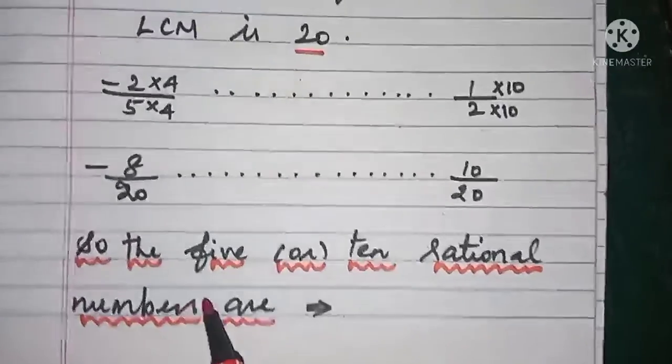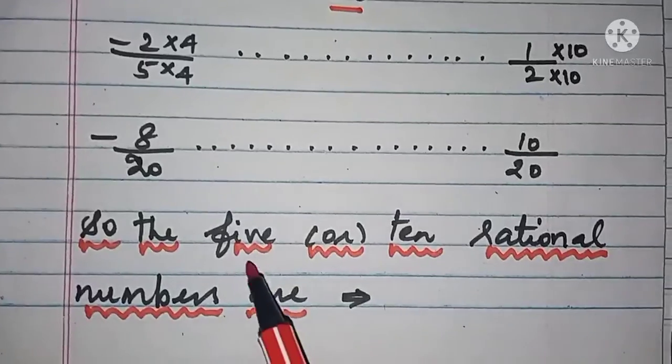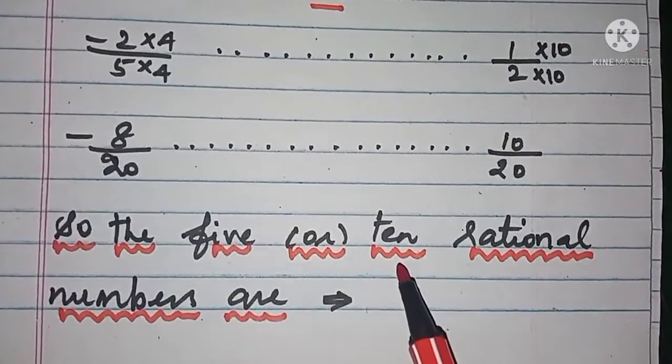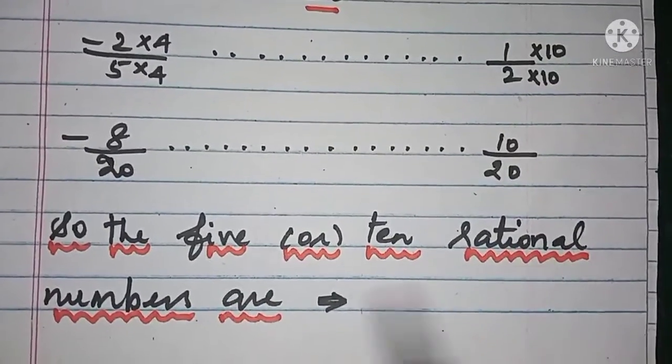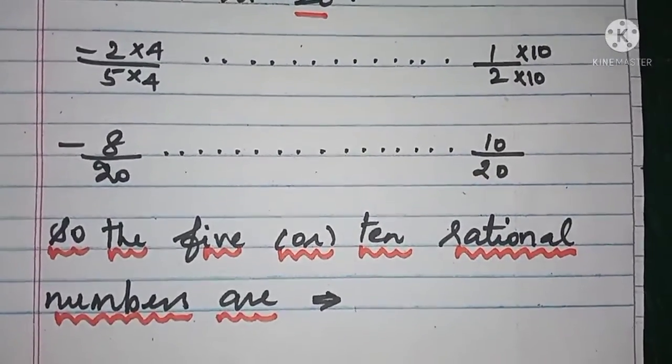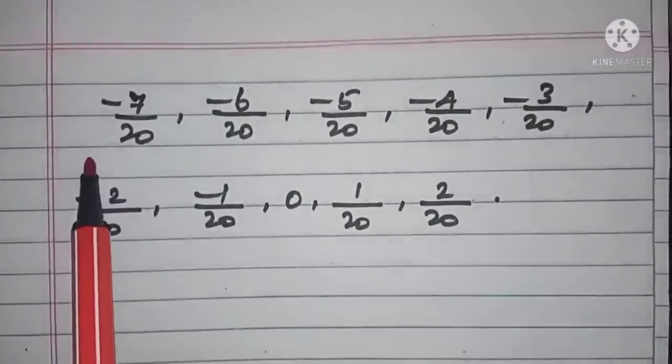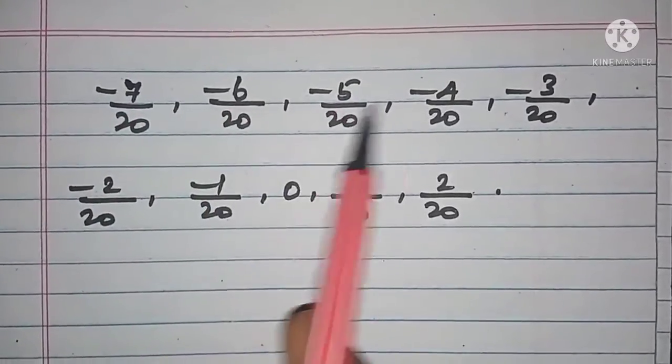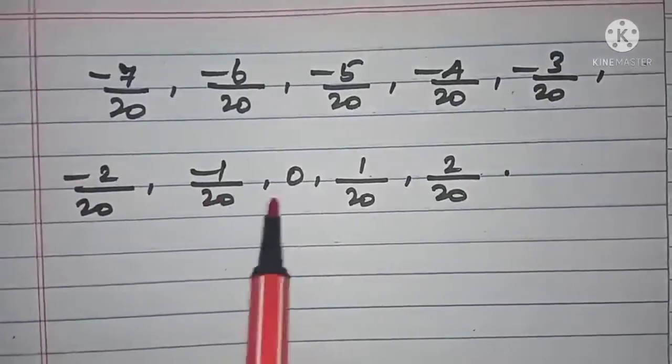If you want to find 5 numbers you can select only 5, but our question asks to find 10 rational numbers. So the first number is -8/20, we will start from -7, -6, -5, -4, -3, -2, -1, then 0, 1, and 2.